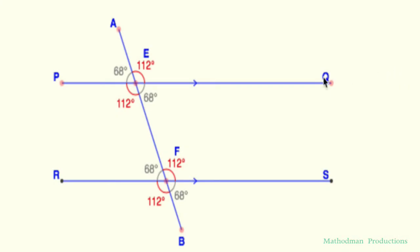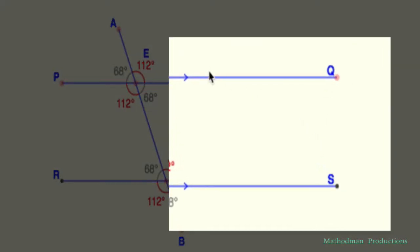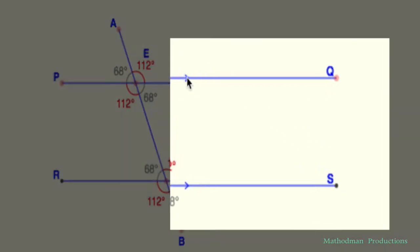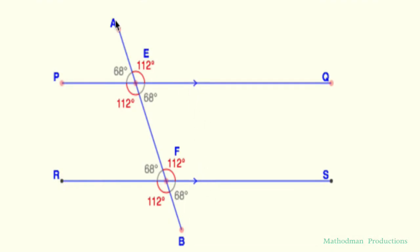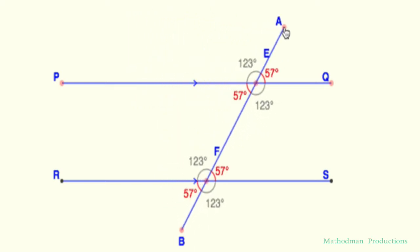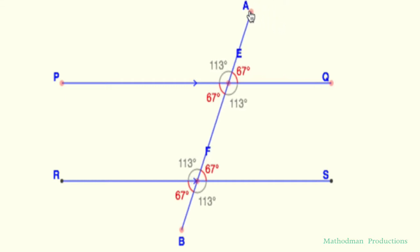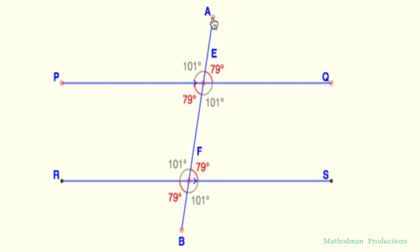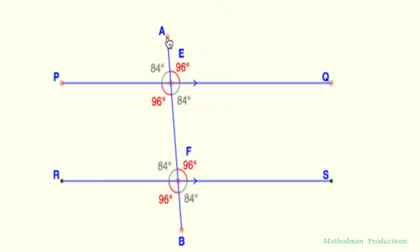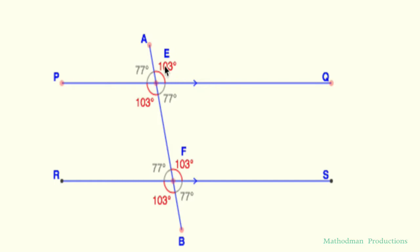Looking at this Q and S are both parallel. You can tell because they have those two little triangles or arrows. Line AB is my transversal. If I have a line that cuts through parallel lines then corresponding angles like E and F are going to be congruent. So as I move this line right here you can tell that those values are always going to be the same. E matches with F. Its top left matches with that other top left and so forth.